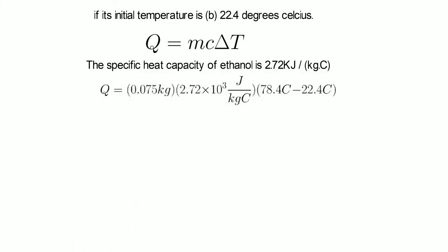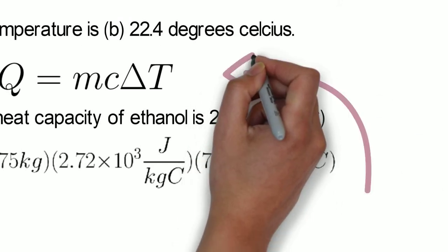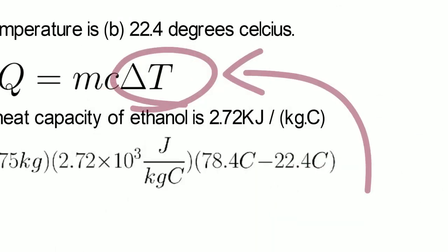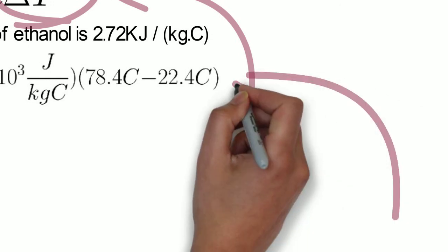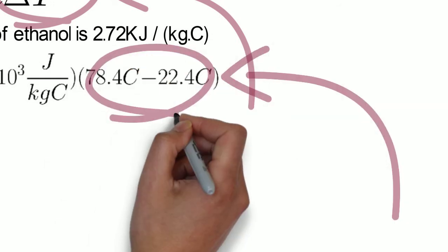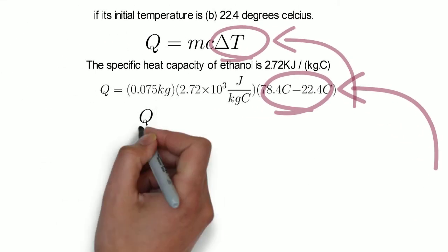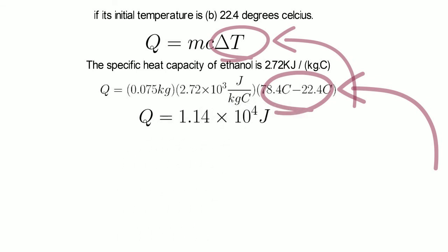We type it into our equation, Q = mcΔT. Make sure you have delta—it's always a change in temperature. Plug in our variables, making sure our units are all in SI units, and we get our value for heat.